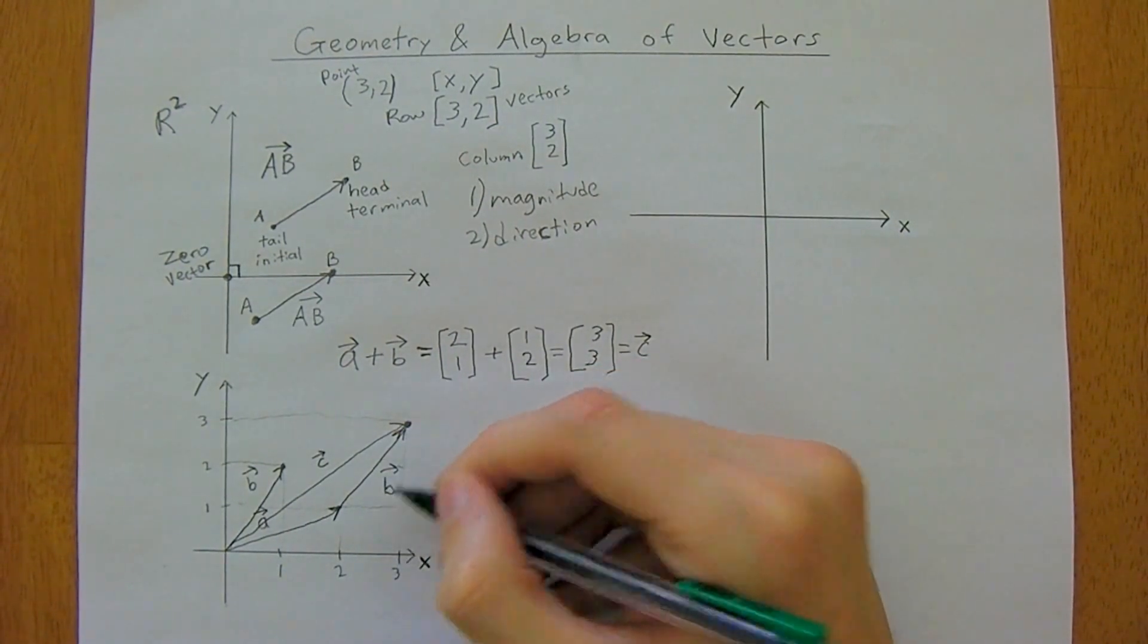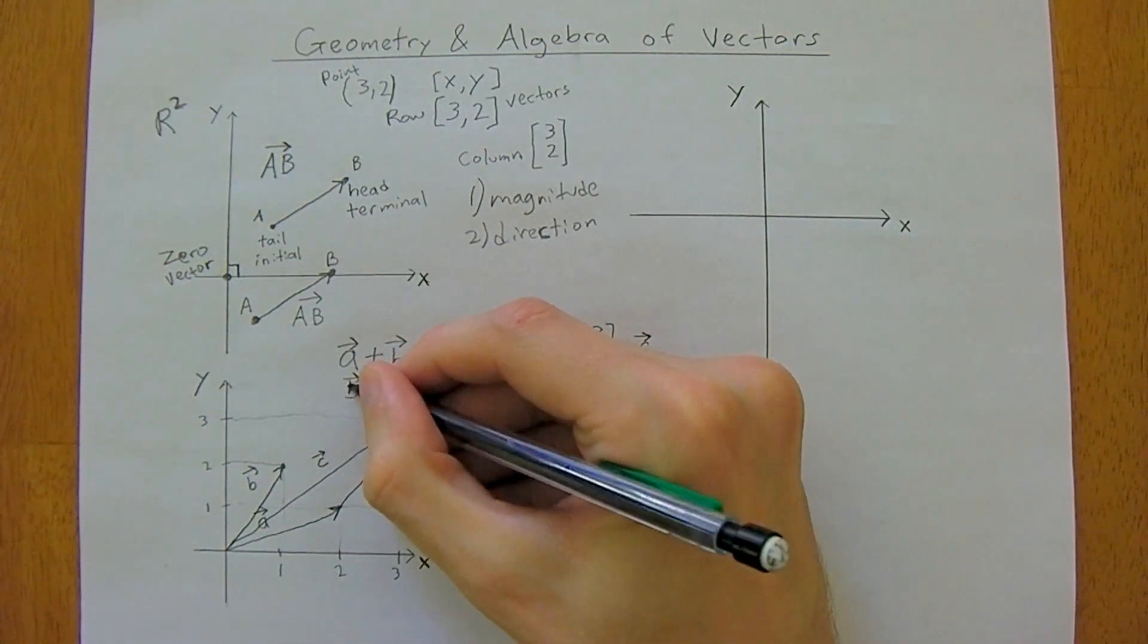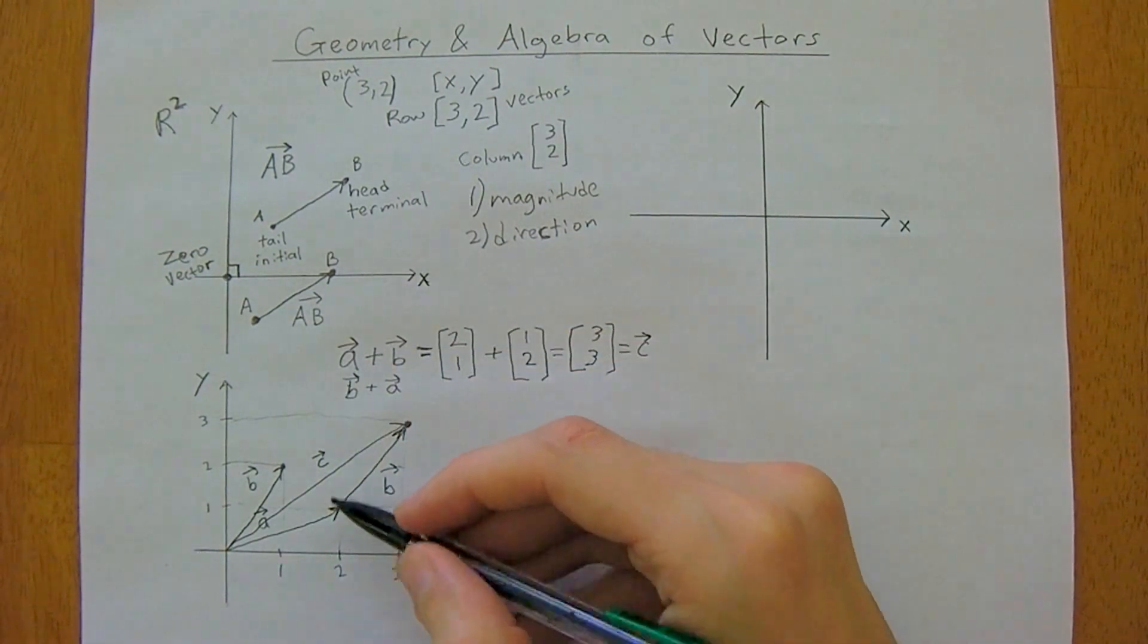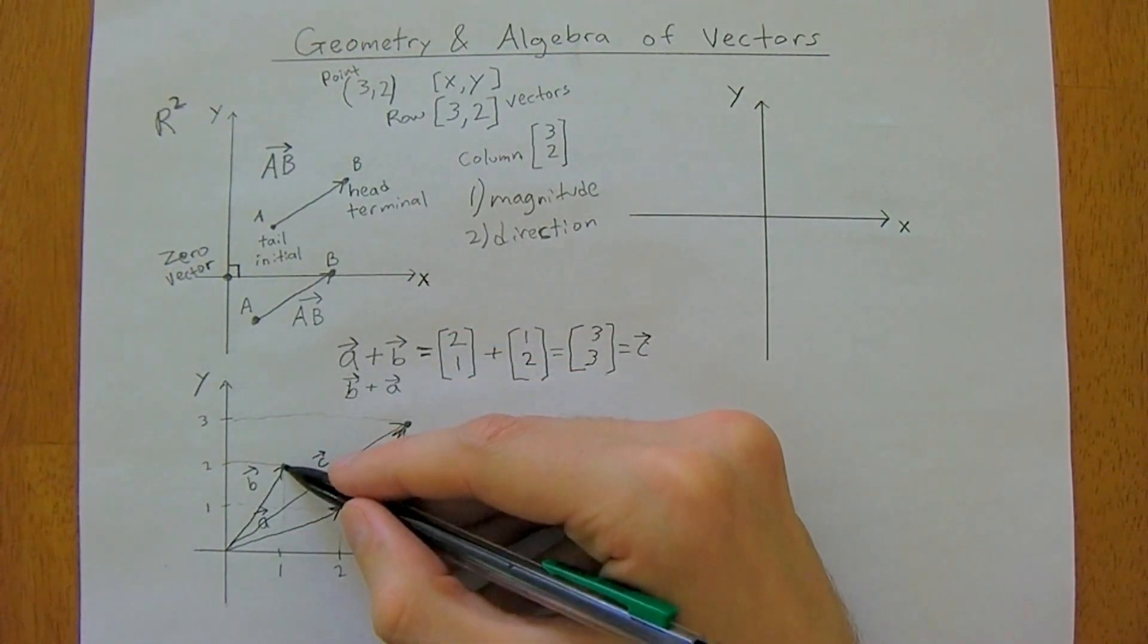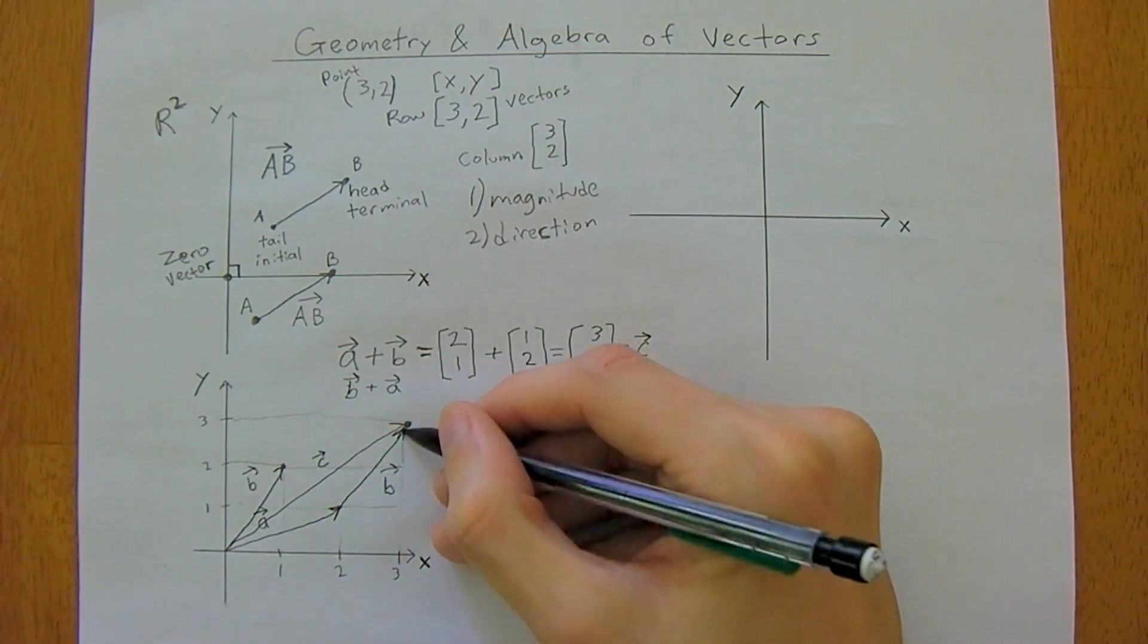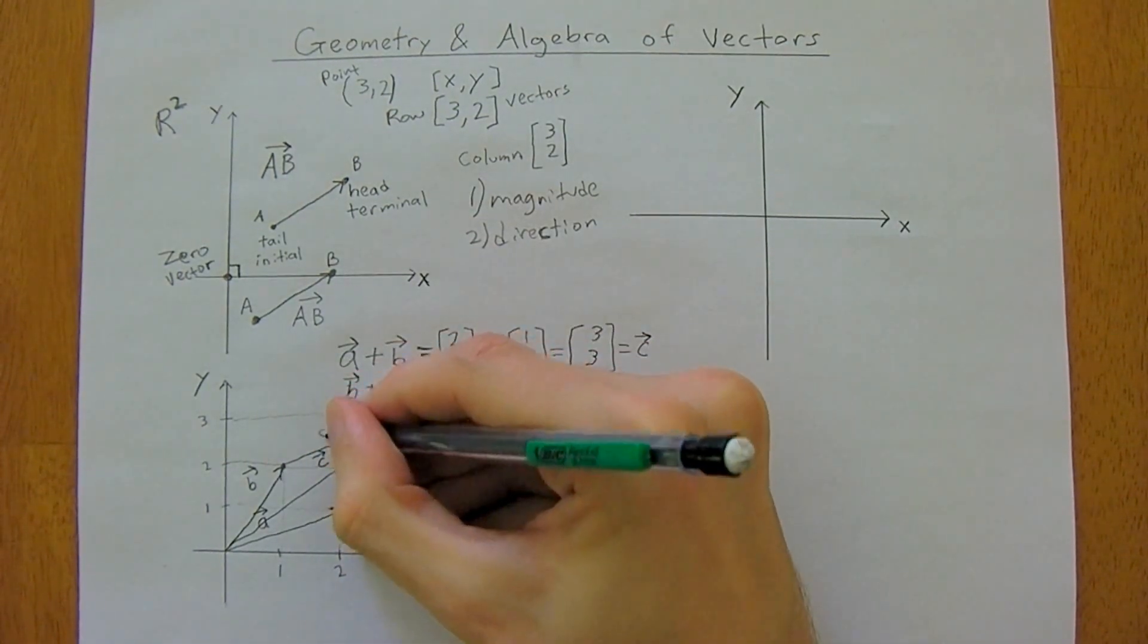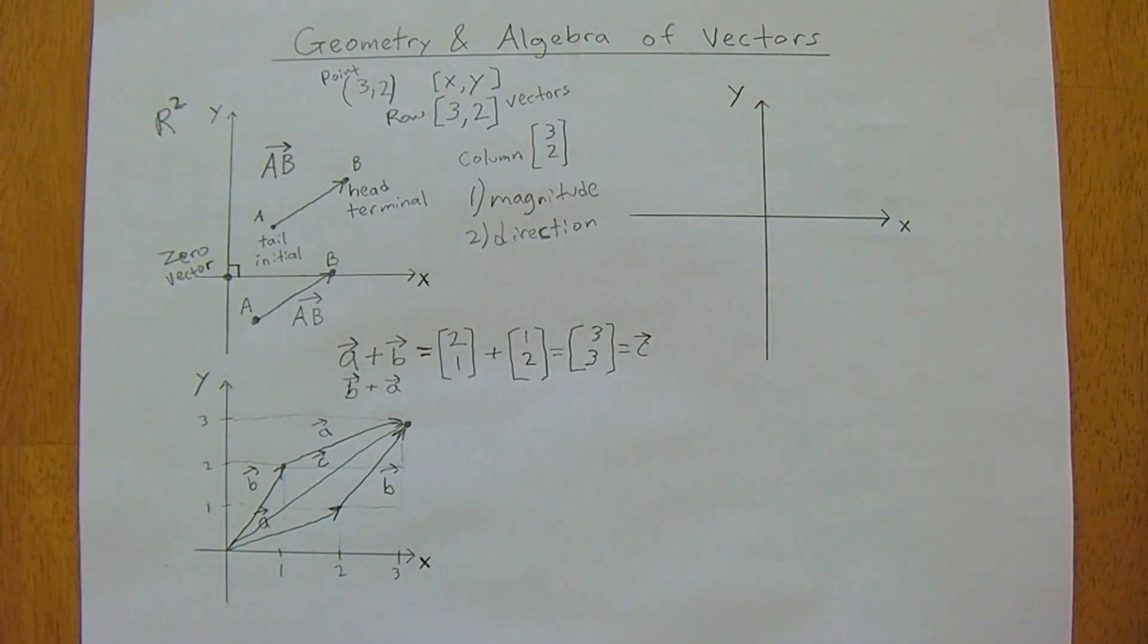Just to prove that this works either way, a plus b is the same as b plus a. You likewise could have taken the tail of a and put it at the head of b. Then you would have gone over 2 and up 1. This would have been vector a, and that also would have given you vector c.